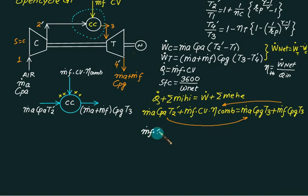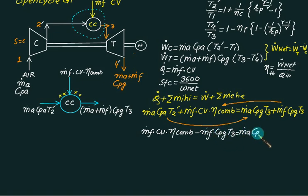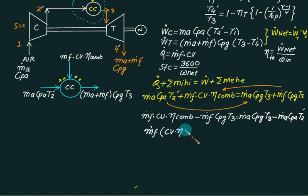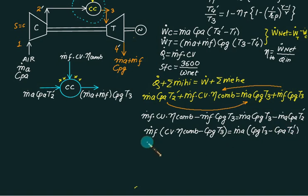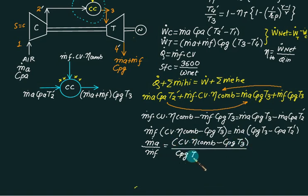After rearranging: m-dot-f × (CV × eta_com - cpg × T3) equals m-dot-a × (cpg × T3 - cp_a × T2-dash). Therefore the air-fuel ratio m-dot-a over m-dot-f equals (CV × eta_com - cpg × T3) divided by (cpg × T3 - cp_a × T2-dash).